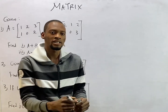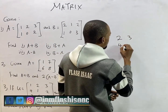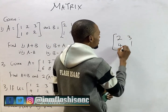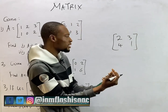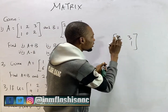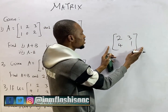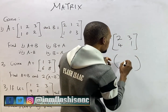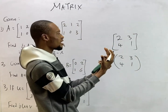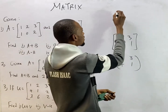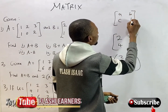For example, if I give you two, three, four and one — these are numbers arranged in a rectangular form, enclosed in brackets. These are matrices. For letters, you can have a matrix like a, b, c and d.